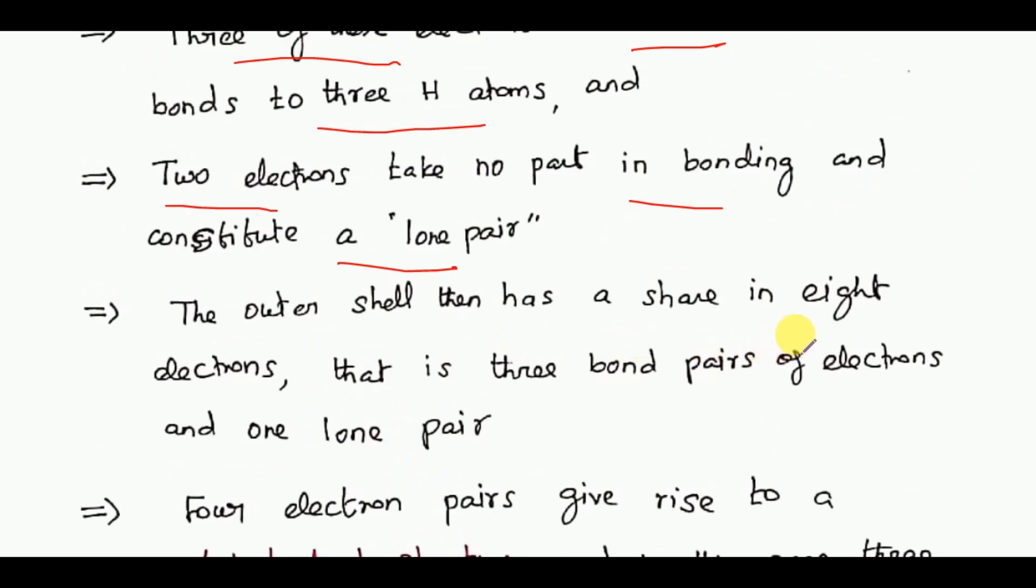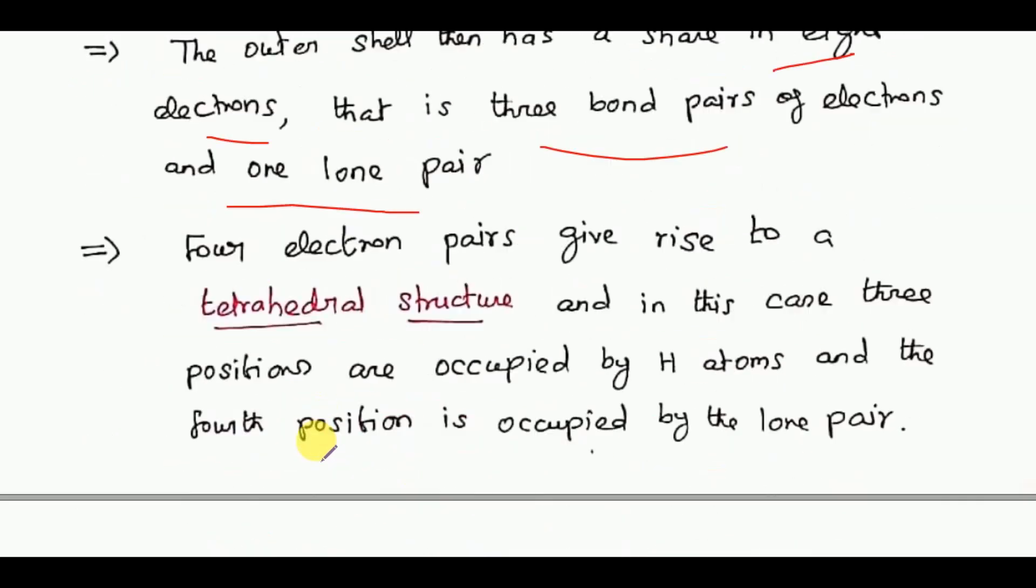The outer shell has a share in eight electrons, that is three bond pairs of electrons and one lone pair of electrons.